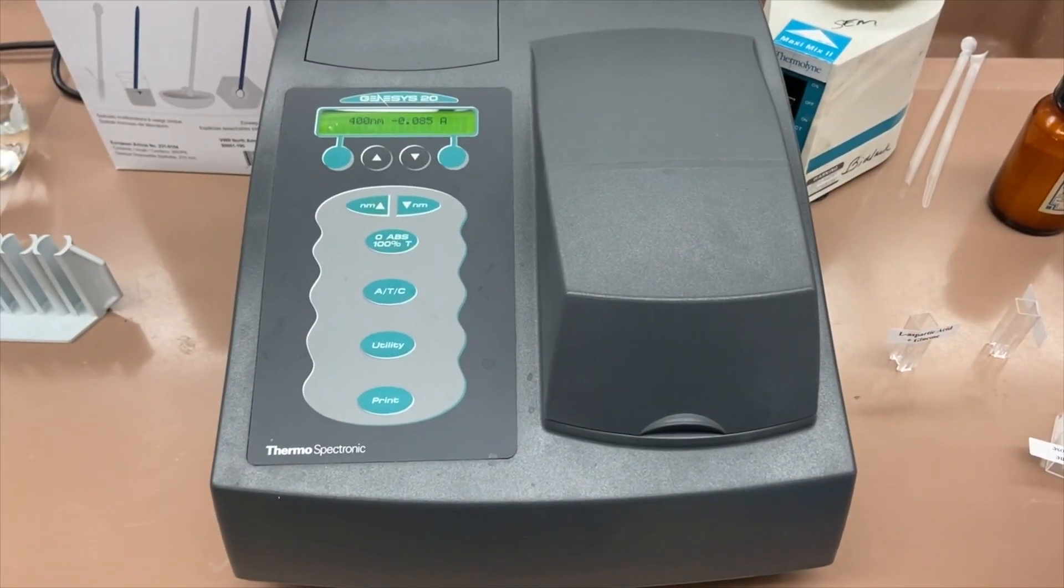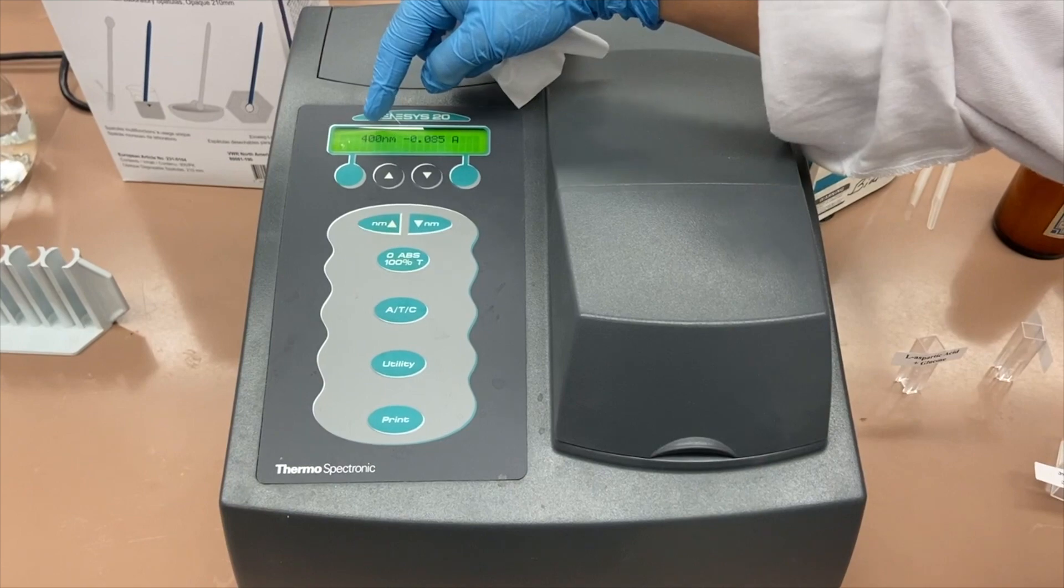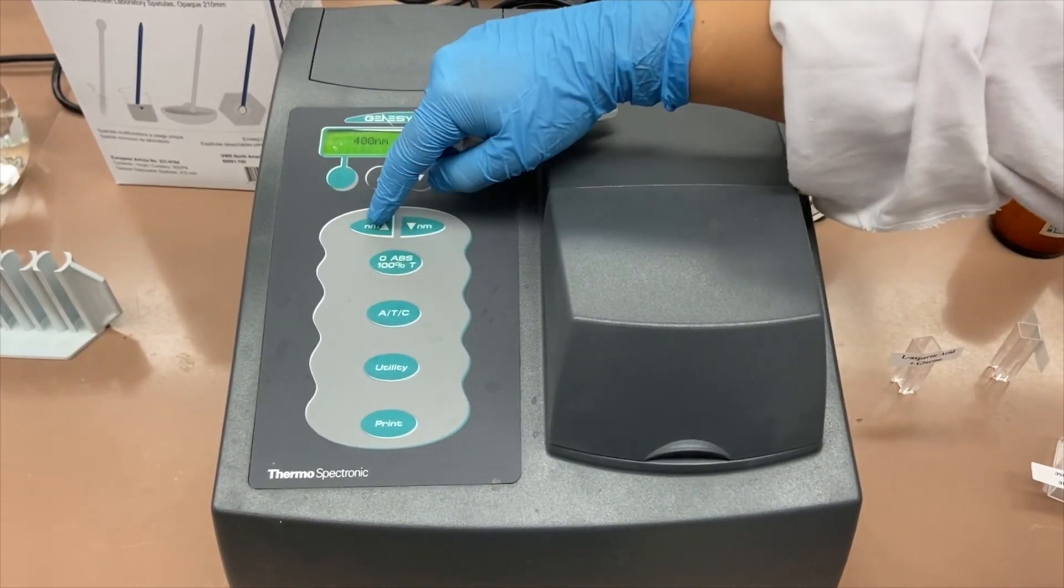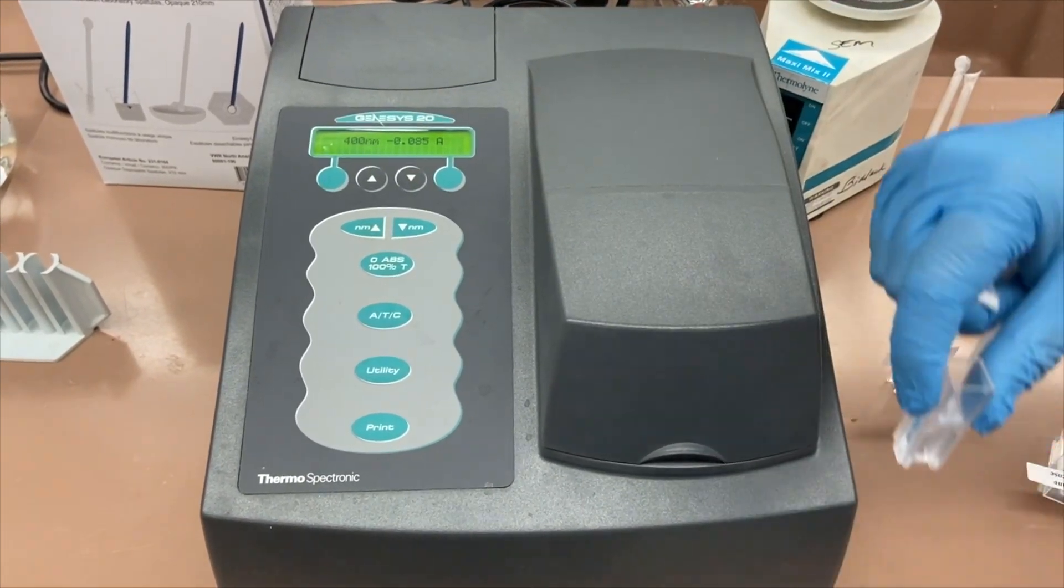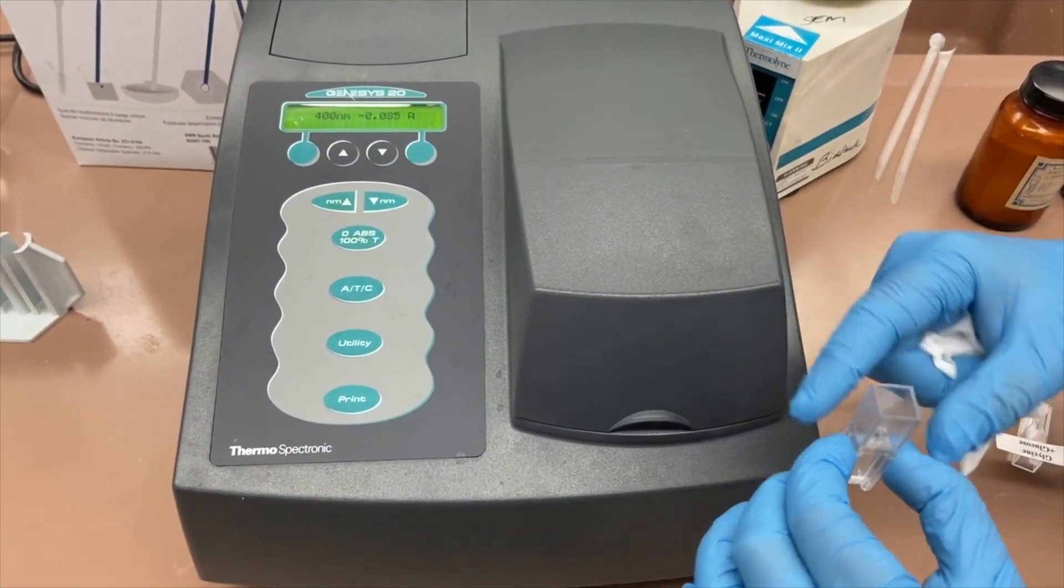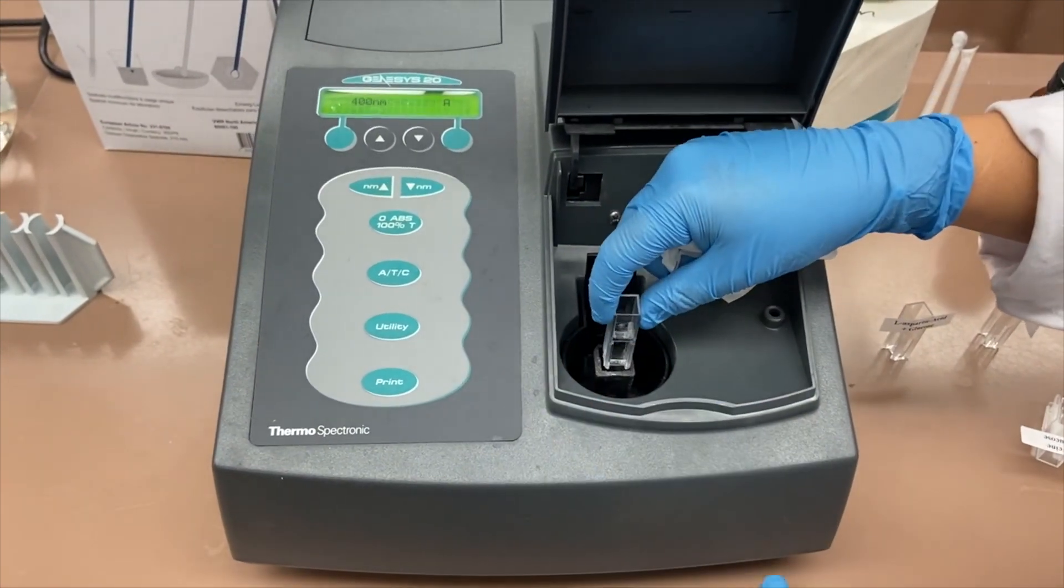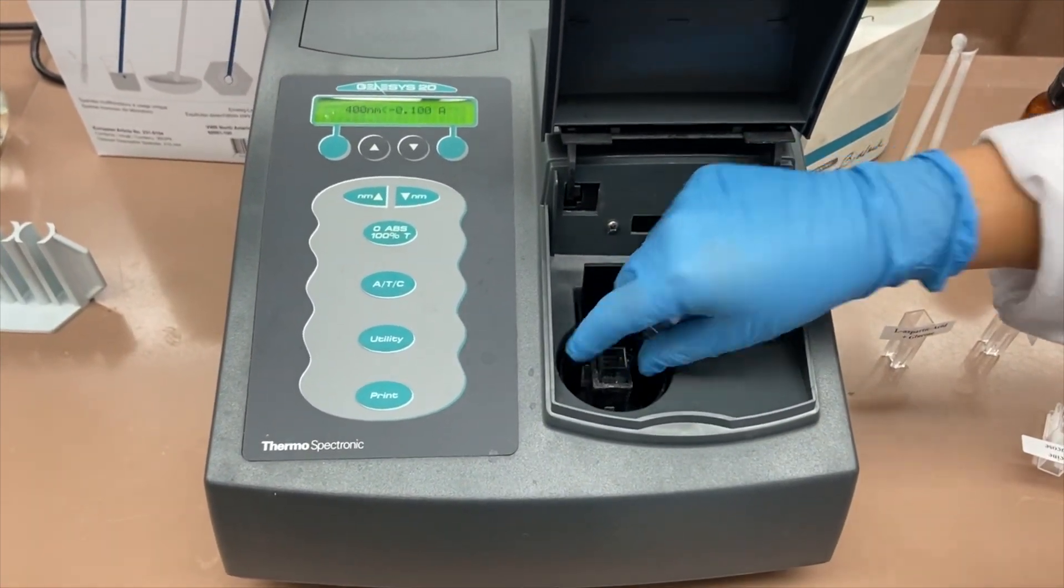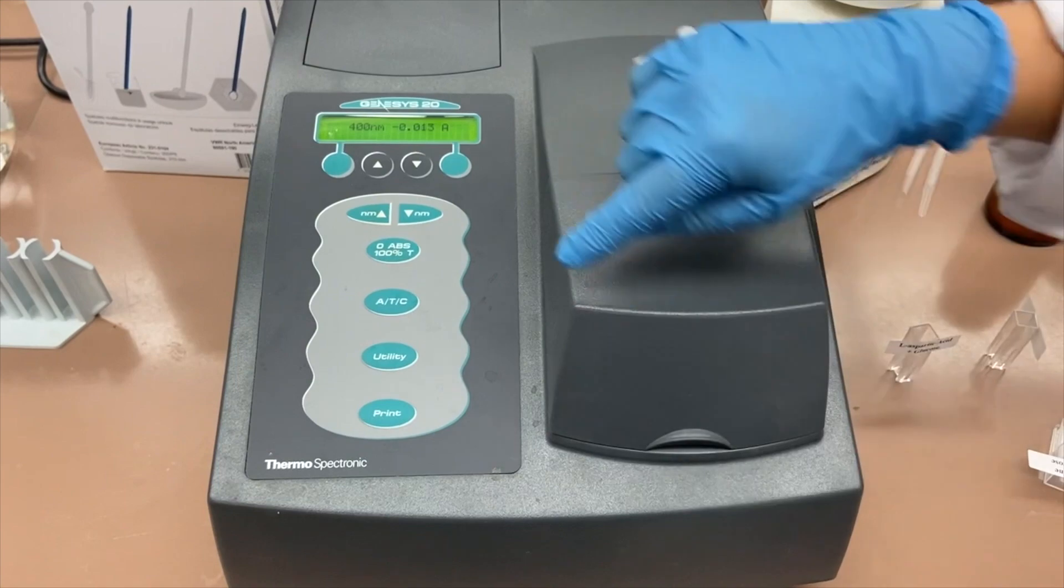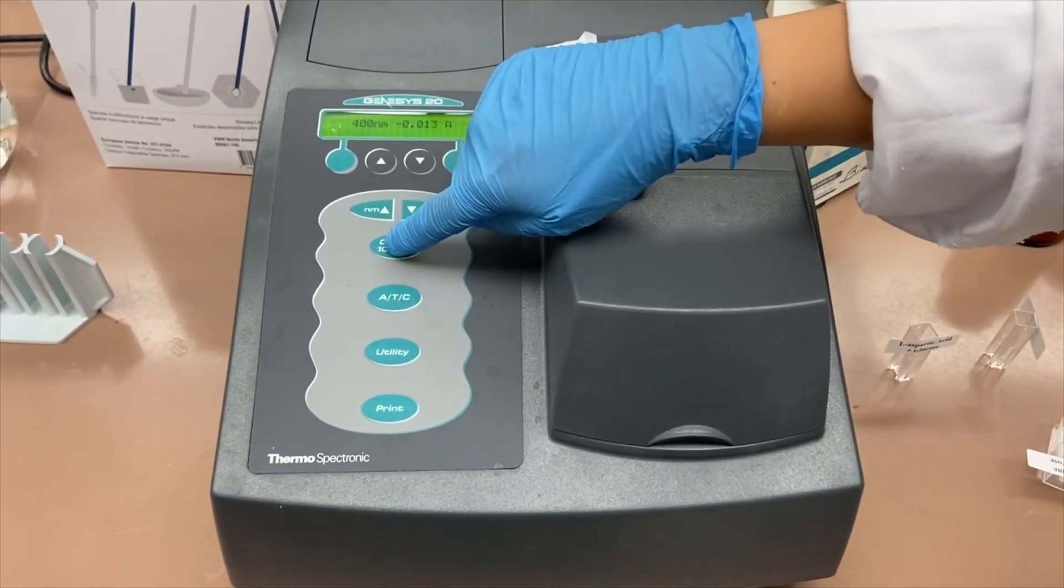This is the spectrophotometer. First, I'll set the wavelength to 400 nanometers using the up and down arrows. This is my sample—I put DI water in it. I'll place it inside, close it up, and hit this button to set the blank because the absorbance for DI water is zero.